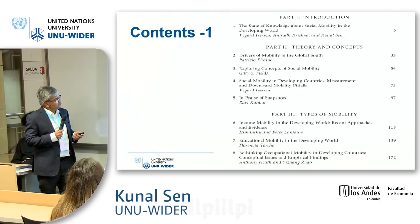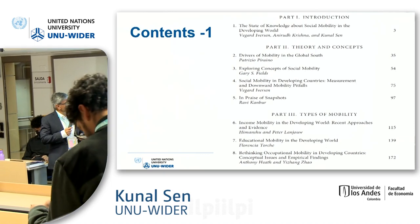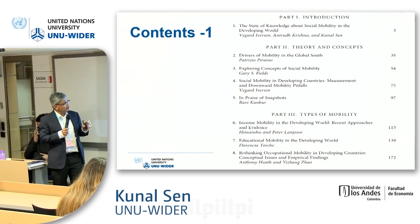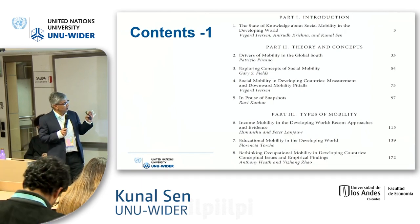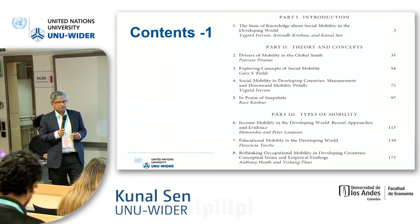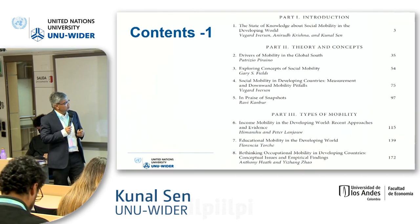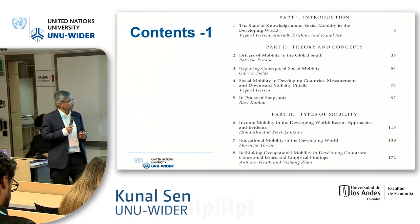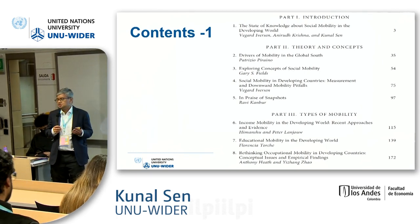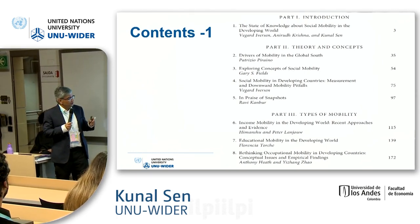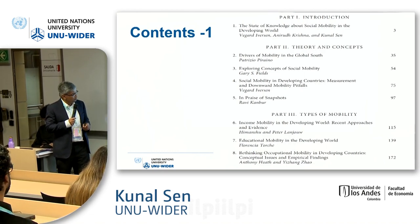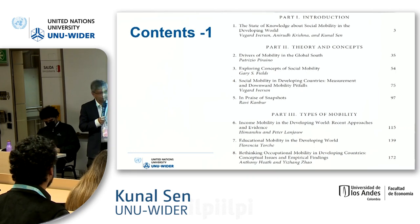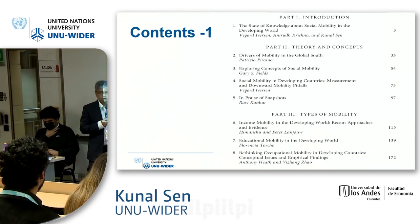The book is in four parts. The first part is on the theory and concepts of mobility. We have a presentation on Chapter 2, Drivers of Mobility in the Global South. We also had Gary Fields, Vegard Davis, and Ravi Khanwood talking about measurement problems and mobility, applying it to low-income contexts. Part 3 is very important because we wanted to have chapters on income mobility, educational mobility, and occupational mobility.